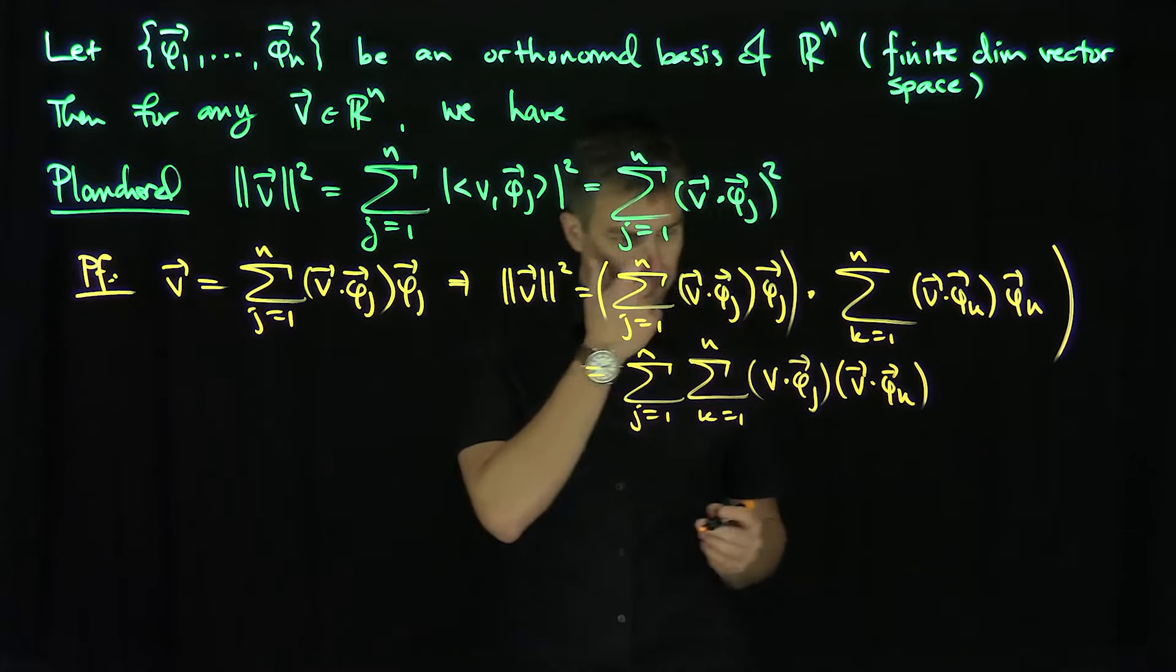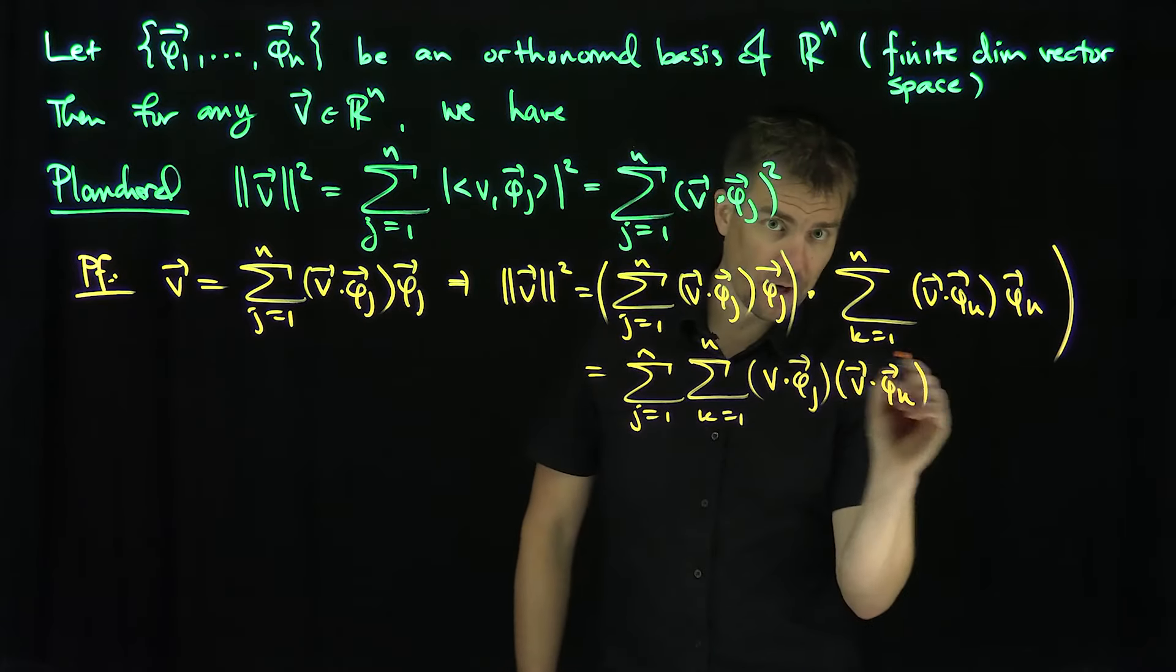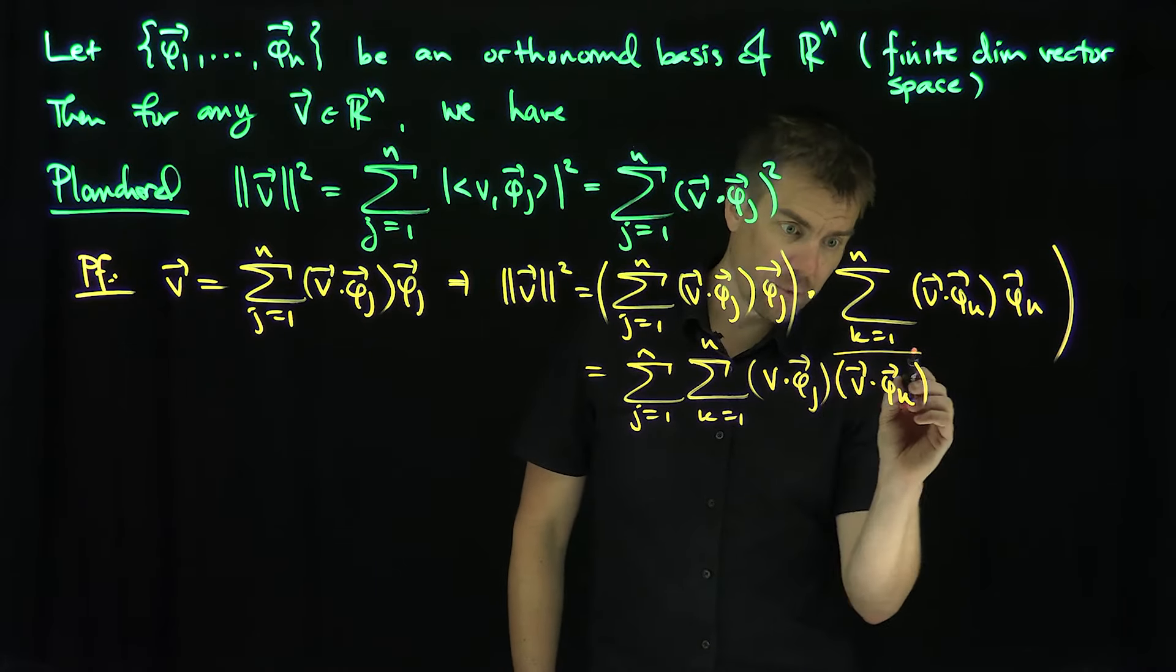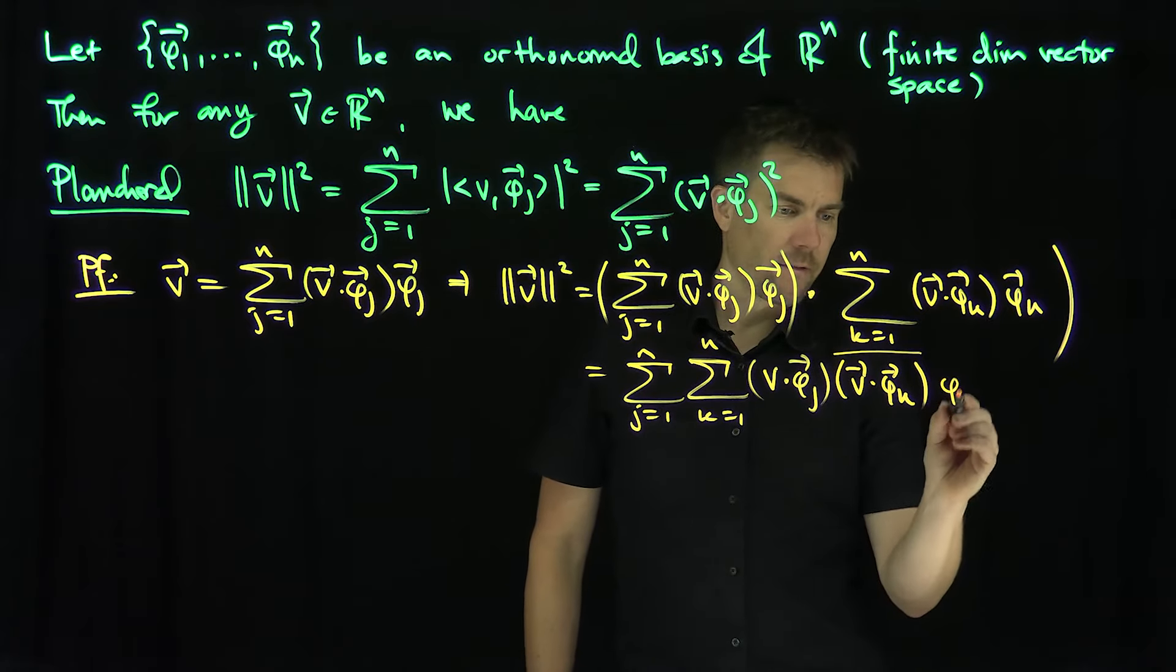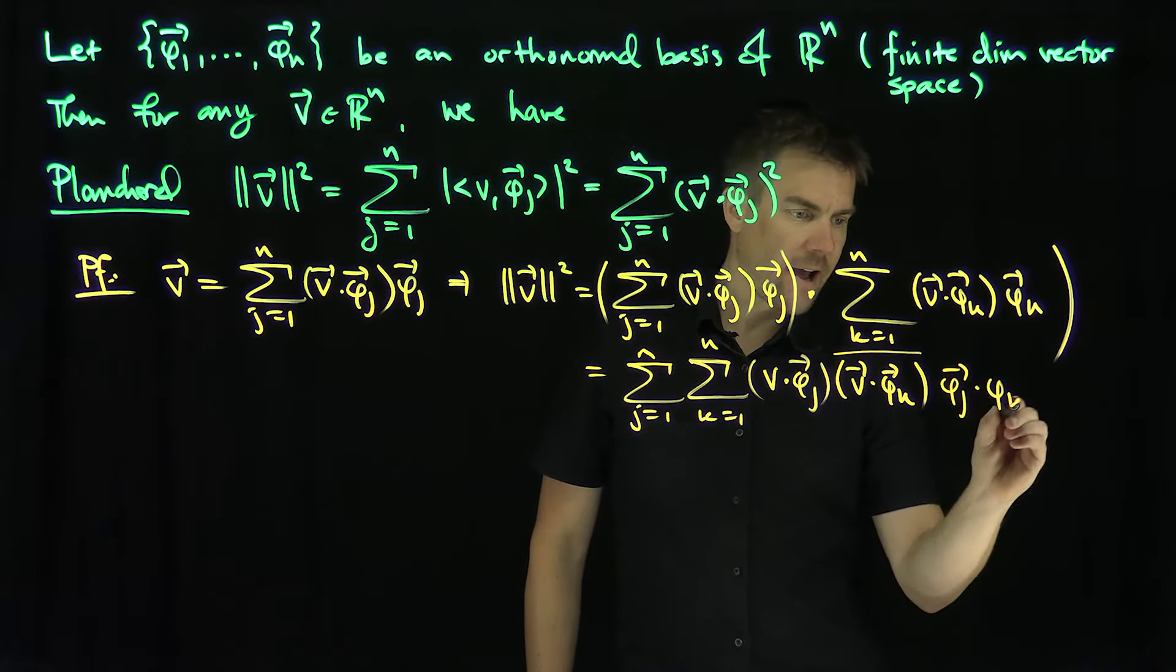If this was a complex vector space, I had to put bars everywhere, but we're in a real vector space. So I can write this as v dot phi_k. For those doing this in a complex vector space, remember to put a bar here. I don't really lose anything if I put a bar or complex conjugate there, because it's a real thing anyway. Then we have phi_j dot phi_k.